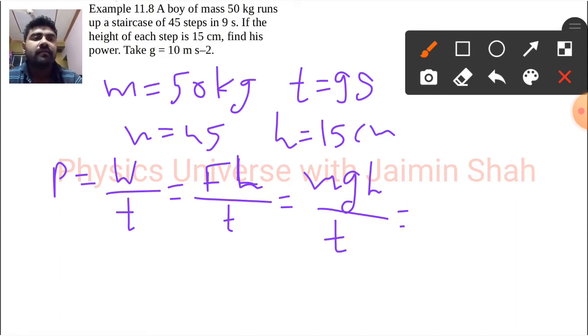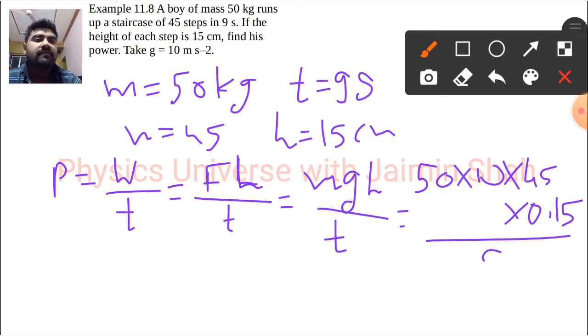First mass is 50, then g we have to take as 10, then h is 45 into 0.15 upon t, and t is 9 seconds.